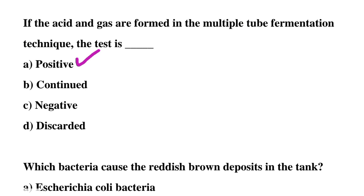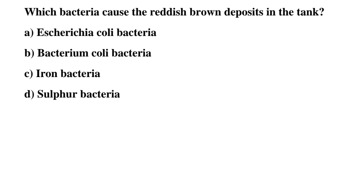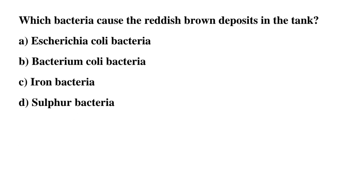Next question: which bacteria causes the reddish-brown deposit in the tank? Option A: E. coli bacteria, option B: Bacterium coli bacteria, option C: iron bacteria, option D: sulfur bacteria. The correct answer is option C: iron bacteria.